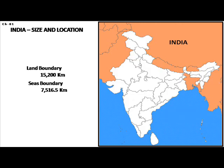India has a land boundary of about 15,200 kilometers and shares its border with seven countries: Pakistan, Afghanistan, China, Nepal, Bhutan, Myanmar, and Bangladesh. The length of India's coastline, including the Andaman and Nicobar and Lakshadweep islands, is about 7,516.6 kilometers.